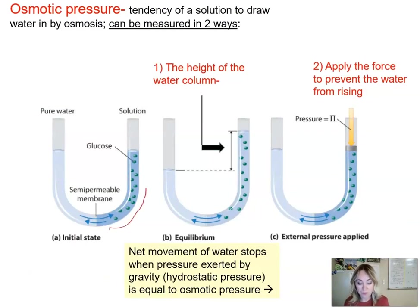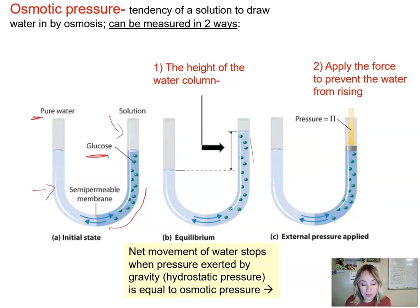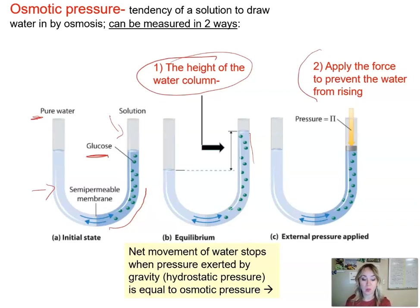On this side of the tube we have pure water, and on this side we have sugar molecules — glucose. You can see how the water movement is happening from left to right because we had more water here since it's pure water and less water in this solution. The water column is rising and we can measure its height, which represents the osmotic pressure. Another way to measure osmotic pressure is by applying force to prevent the water from rising — to see what it takes to stop osmosis from happening.